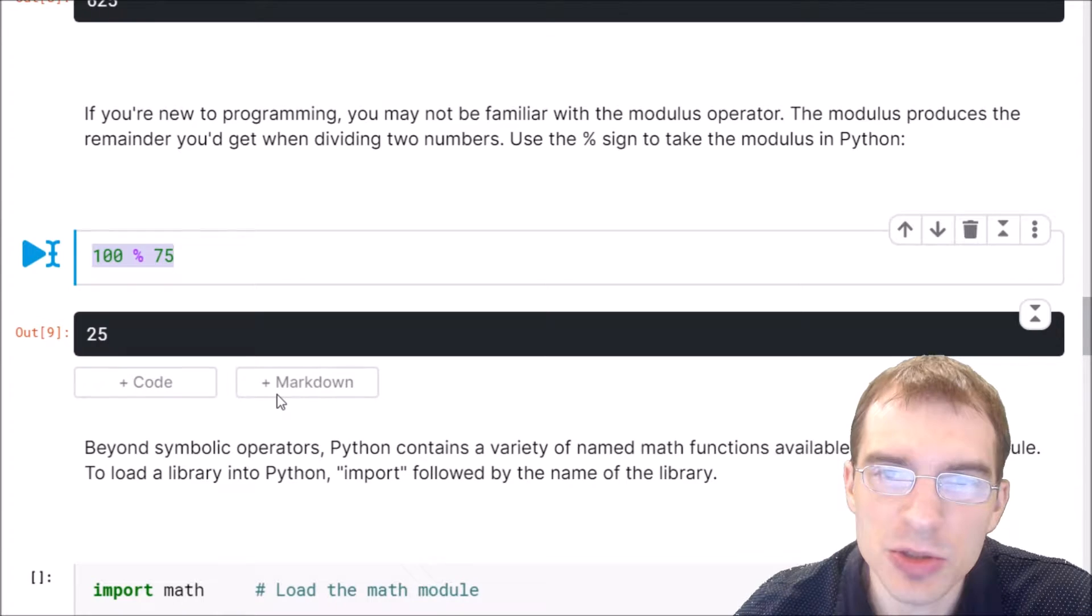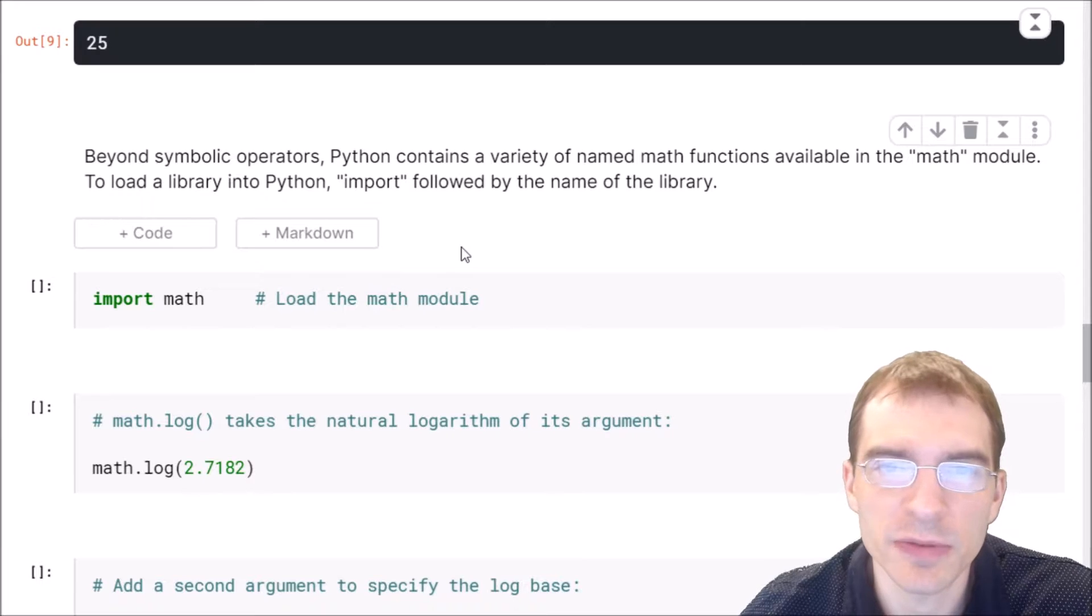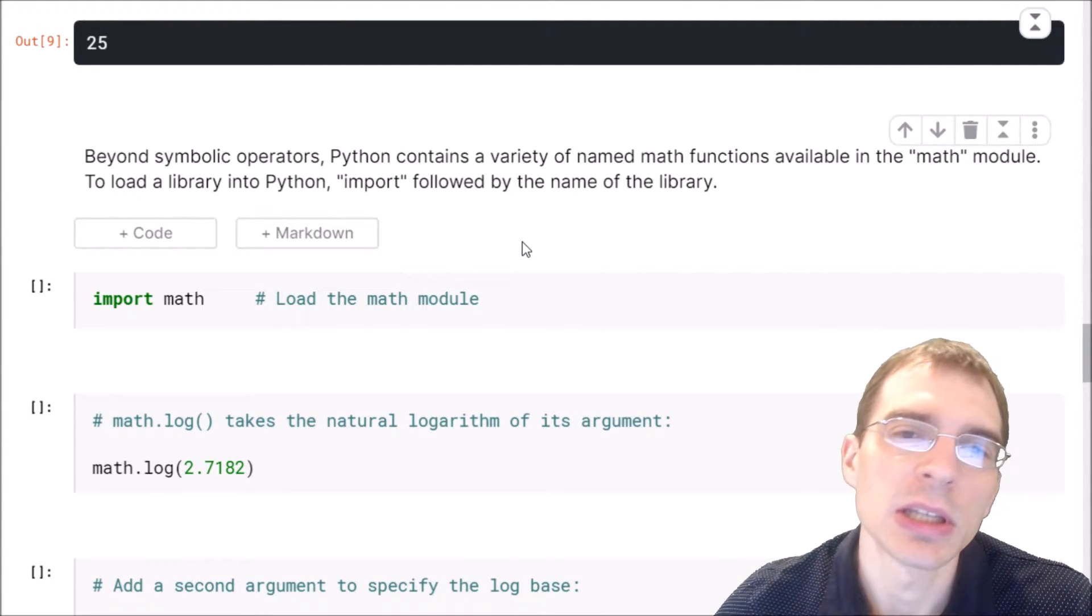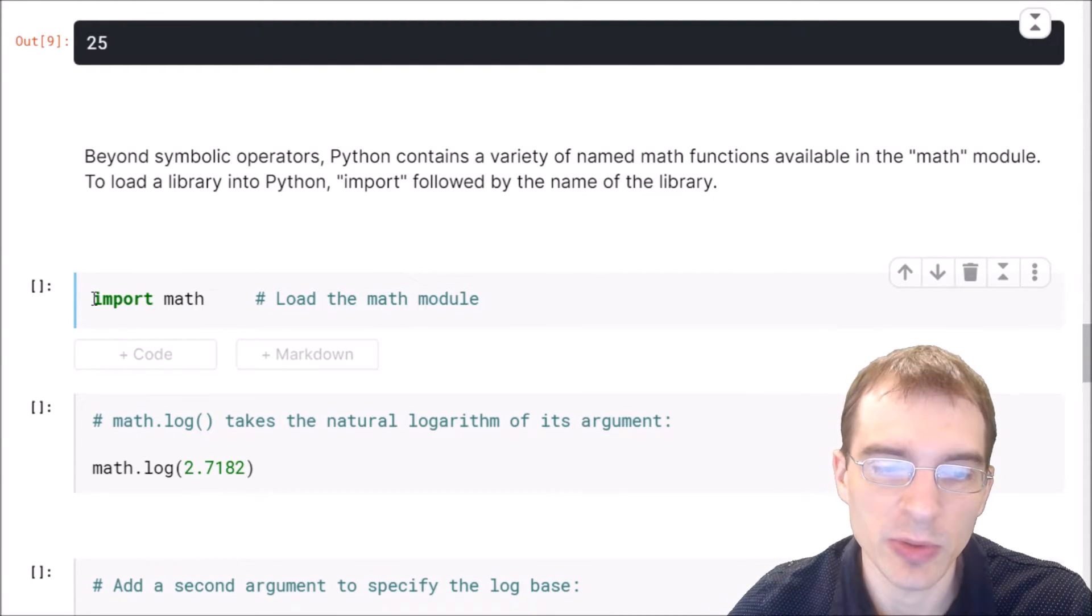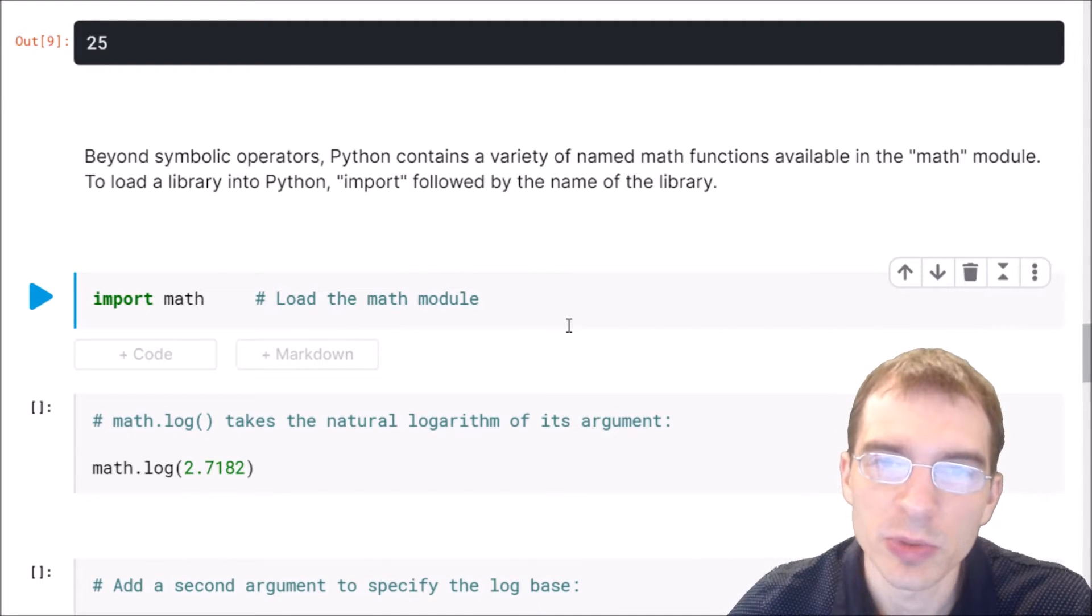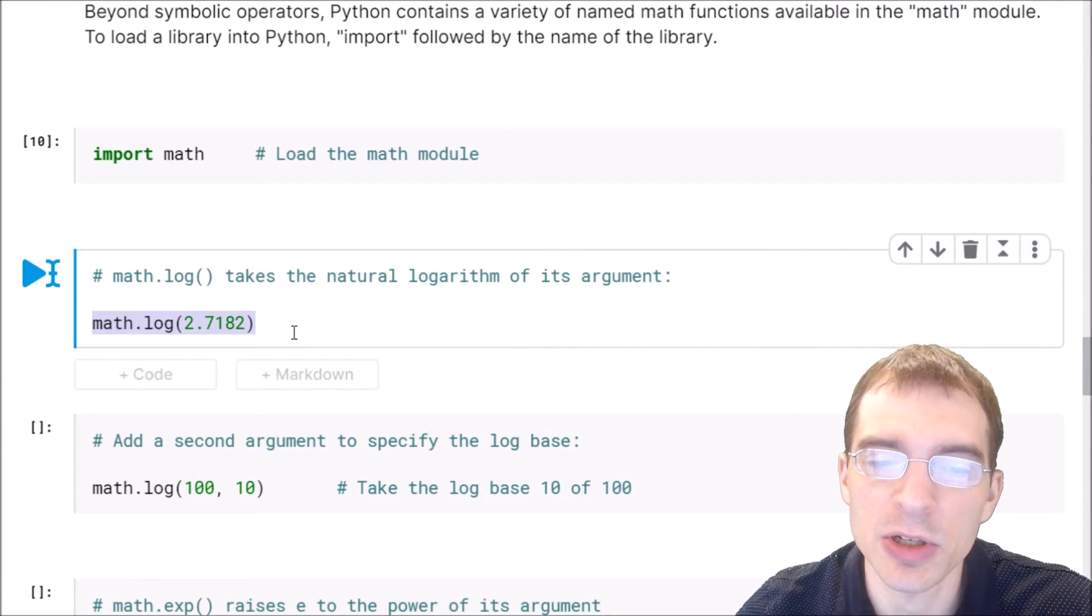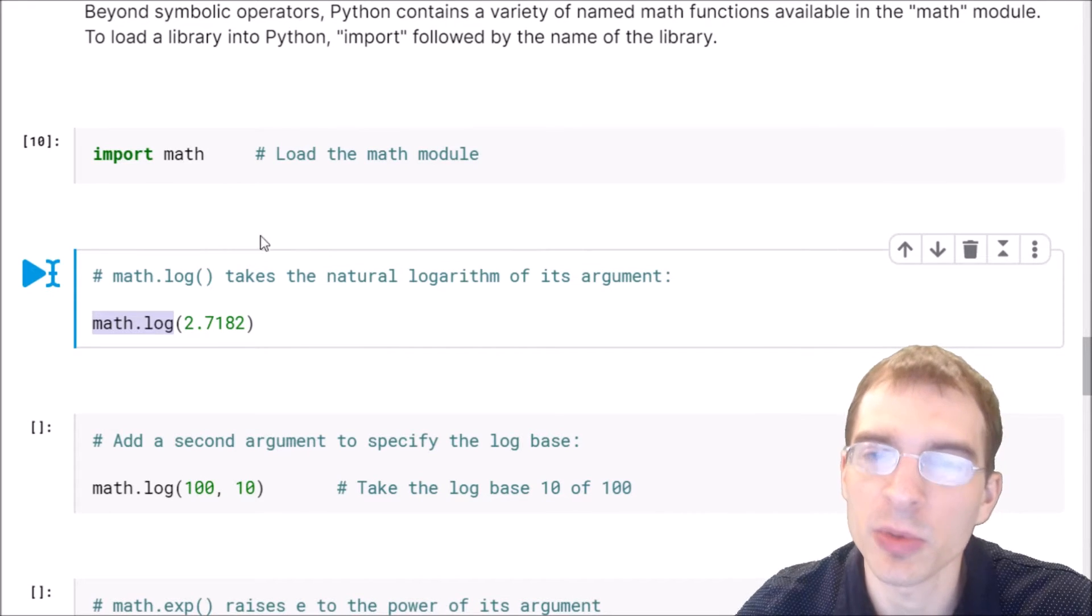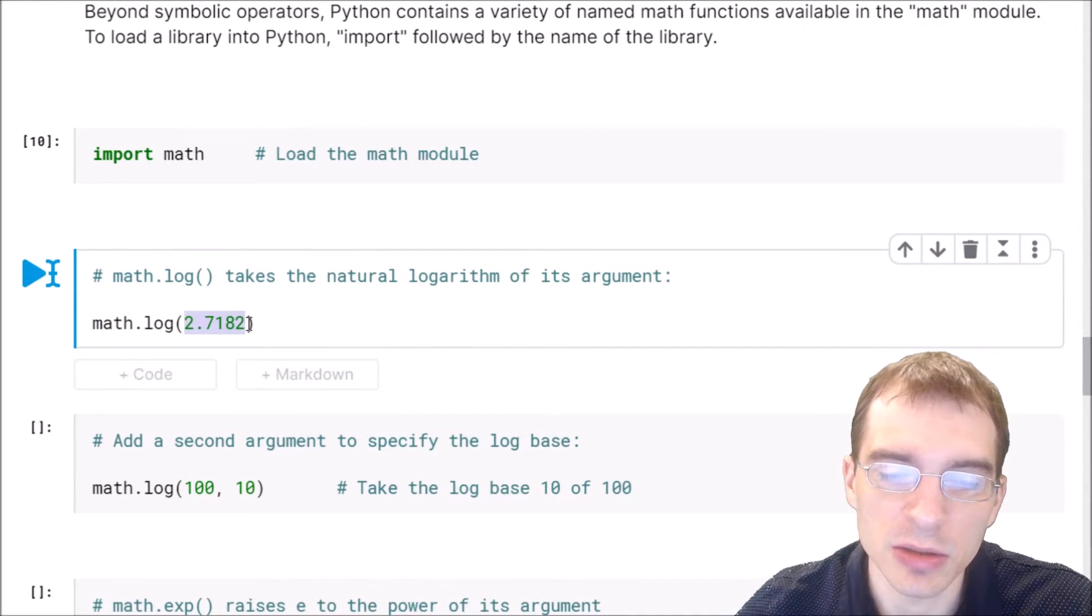I'll go through a couple math functions you can get by importing the math module. The base language of Python is actually fairly bare bones, and a lot of the functions we're going to want to be using you actually have to get from external packages. To do that, you use this import statement. Here we're saying we want to import the math module, which contains various common math functions. Now that we have the math module, we can call various functions by saying math dot and then the name of the function. Here we want to take the logarithm of a number, so we do math dot log. We put whatever number we're taking the logarithm of in the parentheses. This is passed in as the argument to this function.